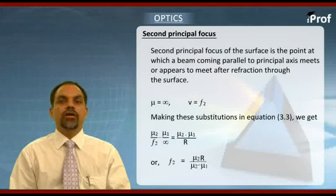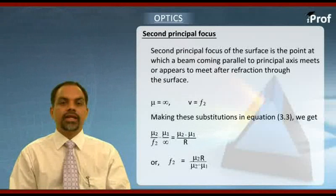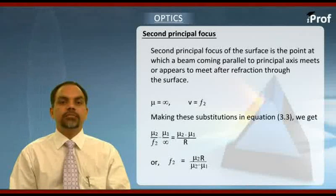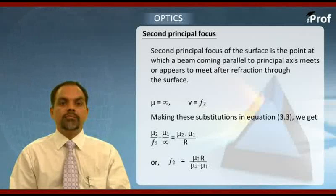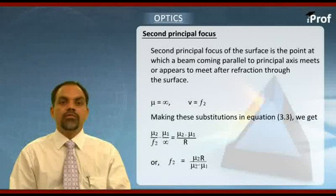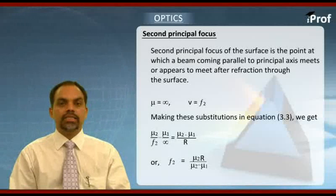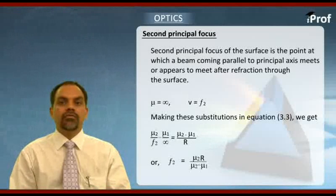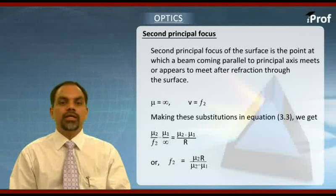We can see very clearly for convex spherical refracting surface, second principal focus will be in the denser medium and here denser medium is mu2 and mu1 is rarer medium. Second principal focal length will be positive for concave spherical refracting surface. Second principal focus will lie in rarer medium and the corresponding focal length that is f2 will be negative.